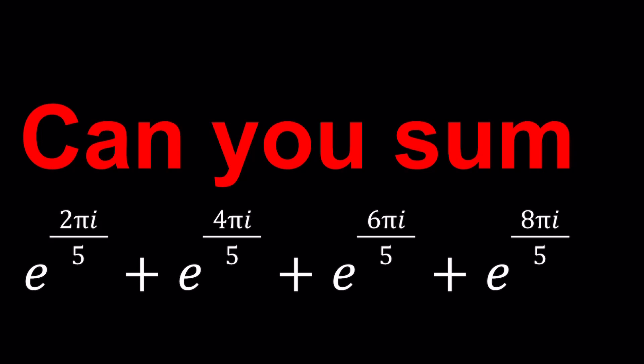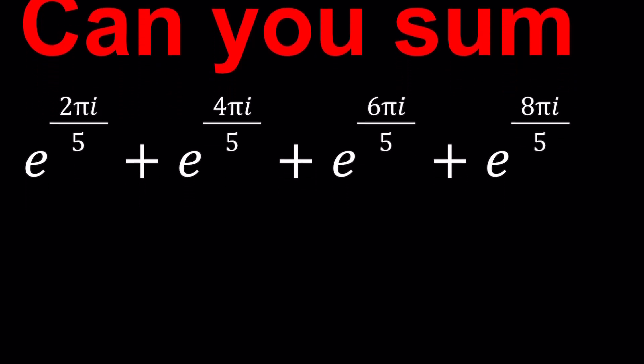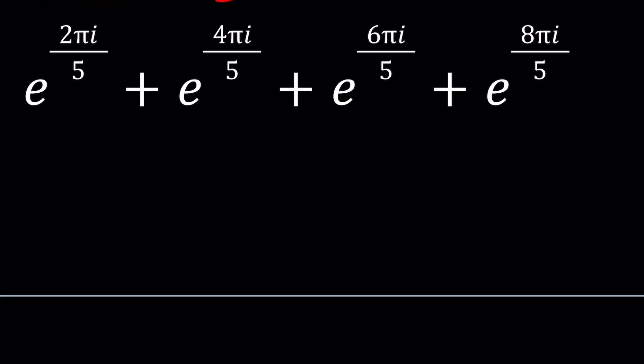So how do you add something like this? What does e to the power something with i mean? Let's go ahead and talk about Euler's formula first because it's just amazing. So here's how it works, e to the power iθ. By the way, if you're new to complex numbers, go ahead and check out my lecture videos. I made a playlist for all my lecture videos.